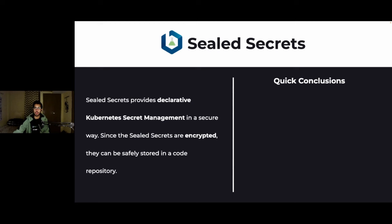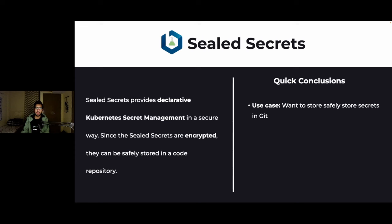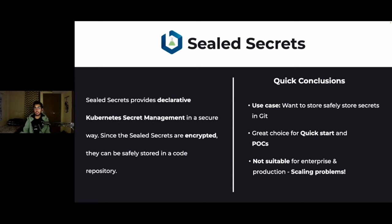When do you want to use sealed secrets? You'll want to use them when you want to store your secrets in Git safely — because these are encrypted and not encoded, they are more secure and you can store them in any code repository of your choice. It's a great choice for quick starts and POCs. However, it has some limitations: it does not scale well, so when you're talking about a production-grade or enterprise-grade system, sealed secrets might not be suitable for those use cases.